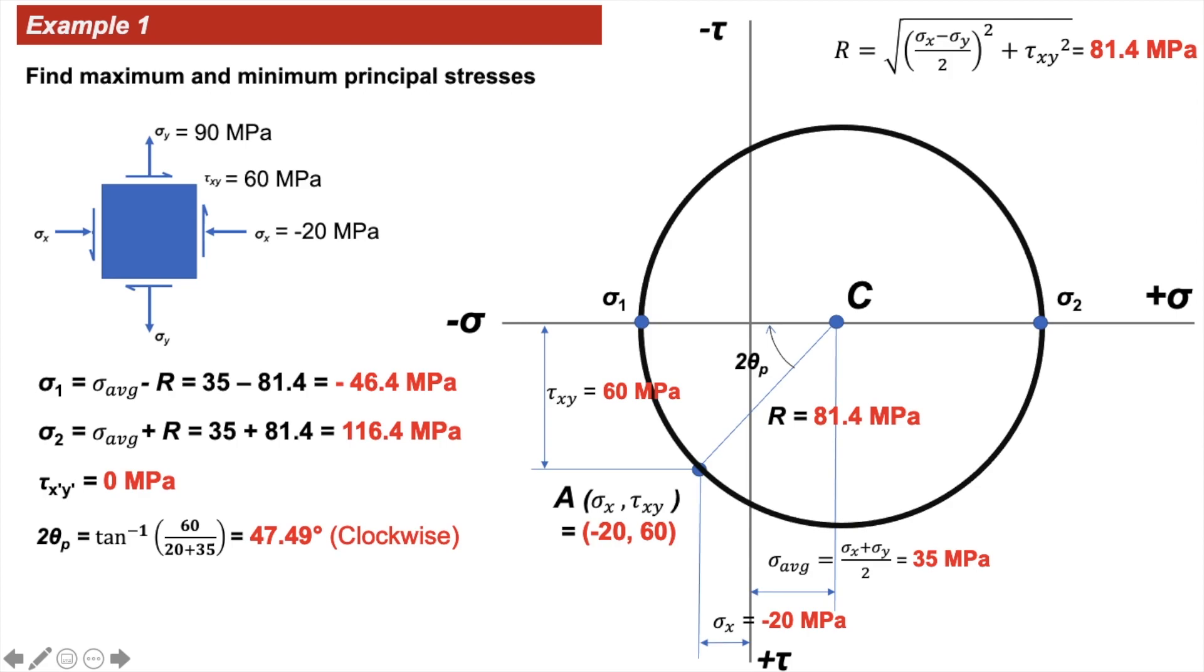Let's find out by how much we have to rotate our element to reach this state. We have to rotate by theta p. In the Mohr's Circle, we rotate by 2 theta p, which turns out to be 47.49 degrees clockwise, corresponding to theta p of 23.74 degrees.